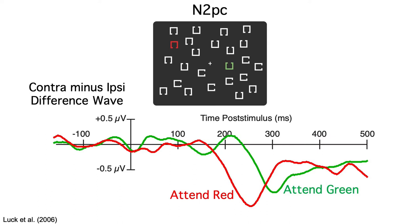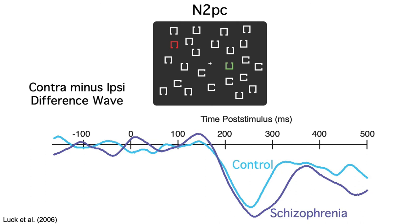These are actually the data from a group of control subjects in a schizophrenia study. Our main goal was to see if the N2PC is delayed in people with schizophrenia. This plot overlays the data from the schizophrenia and control groups, averaged across attend red and attend green. You can see that the onset time of the N2PC is essentially identical in the two groups. We concluded that schizophrenia does not slow down the process of finding the target and shifting attention to it.